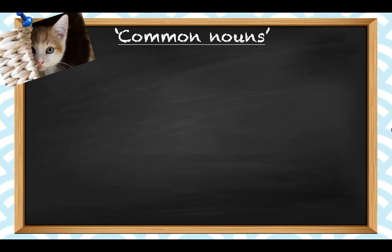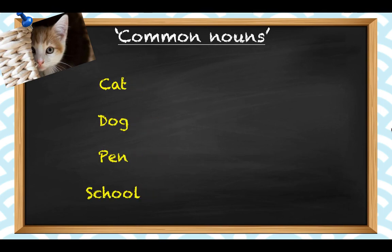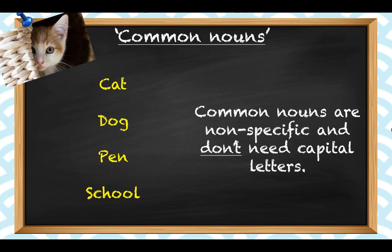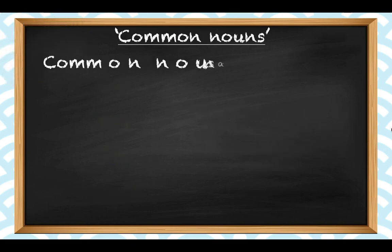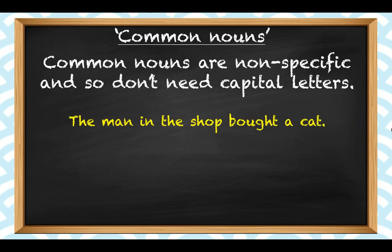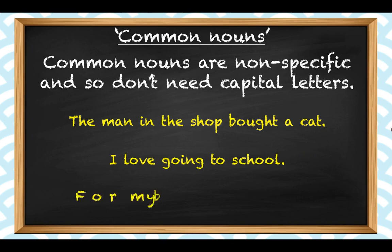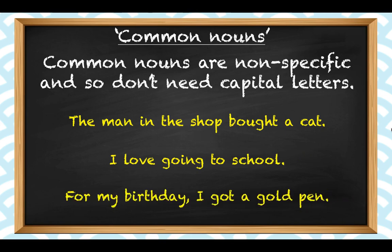Common nouns refer to most things. For example, cat, dog, pen, school — all of these are things, they are all nouns. Common nouns are common because they are non-specific and don't need capital letters. We don't need a capital letter for cat when we say, 'the man in the shop bought a cat.' We don't need a capital letter for school when we say, 'I love going to school,' and we don't need a capital letter for pen when we say, 'for my birthday, I got a gold pen.'